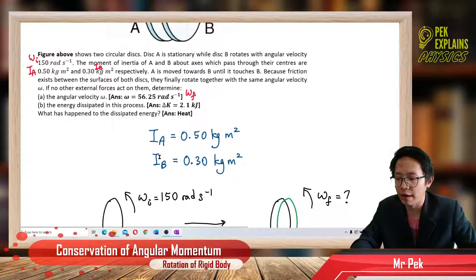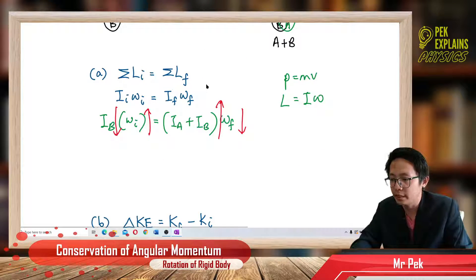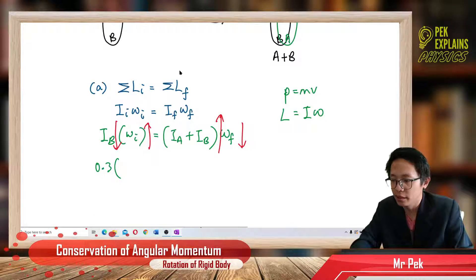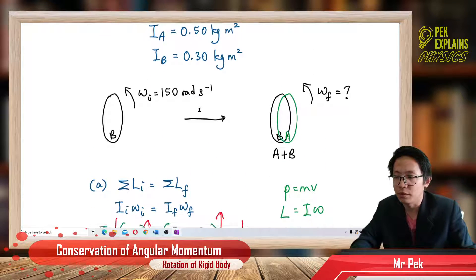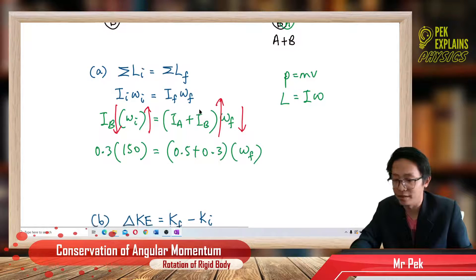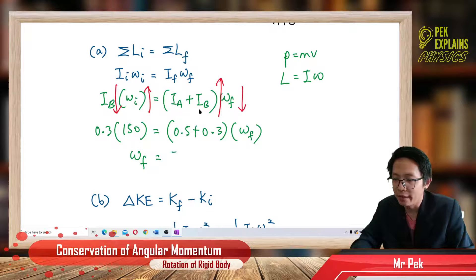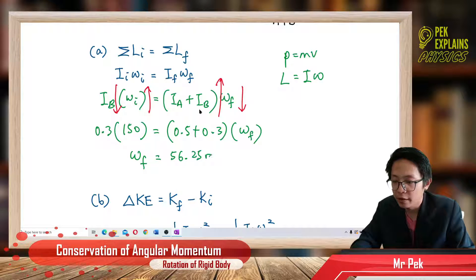Now let's put in the values of IA and IB. IB is 0.3, and the initial angular velocity is 150. Then IA plus IB is 0.5 plus 0.3, and we solve for the final angular velocity. I get 56.25 radians per second.